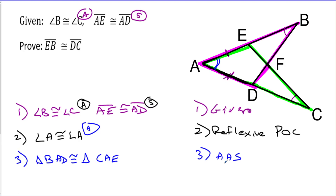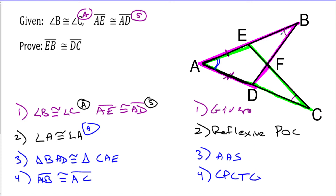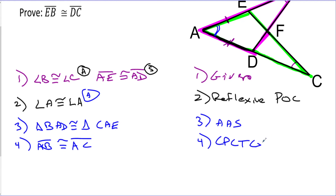We run into a problem here because EB and DC are not parts of those triangles, so I can't use them directly. Instead, by CPCTC, step four: AB is congruent to AC. Here's why I'm choosing these — I already know about AE and AB. AB is made up of AE and EB, so I can use the segment addition postulate to say something about EB. Let's start off: AB is congruent to AC by CPCTC.